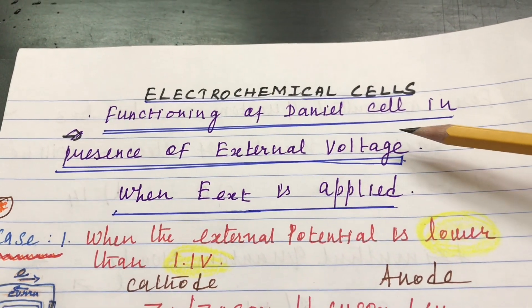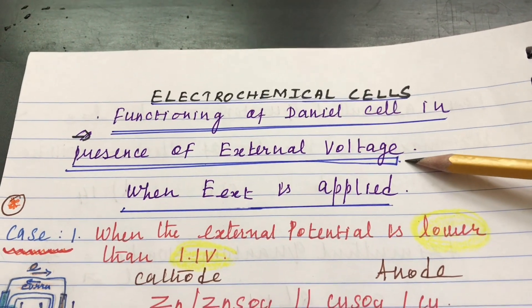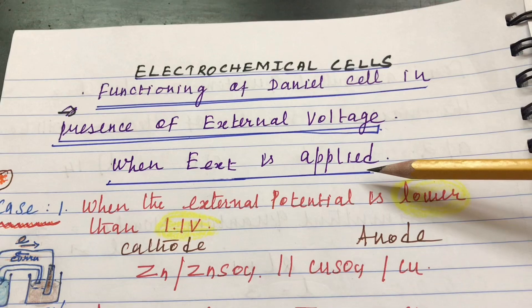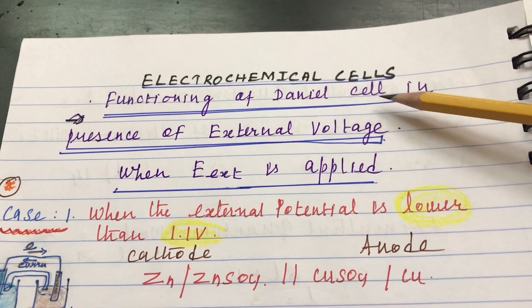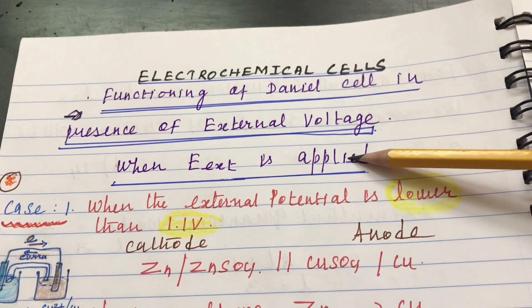Electrochemical cells: functioning of a Daniel cell in presence of external voltage. In this video, we are going to see what possible changes take place in the Daniel cell when external potential is applied.